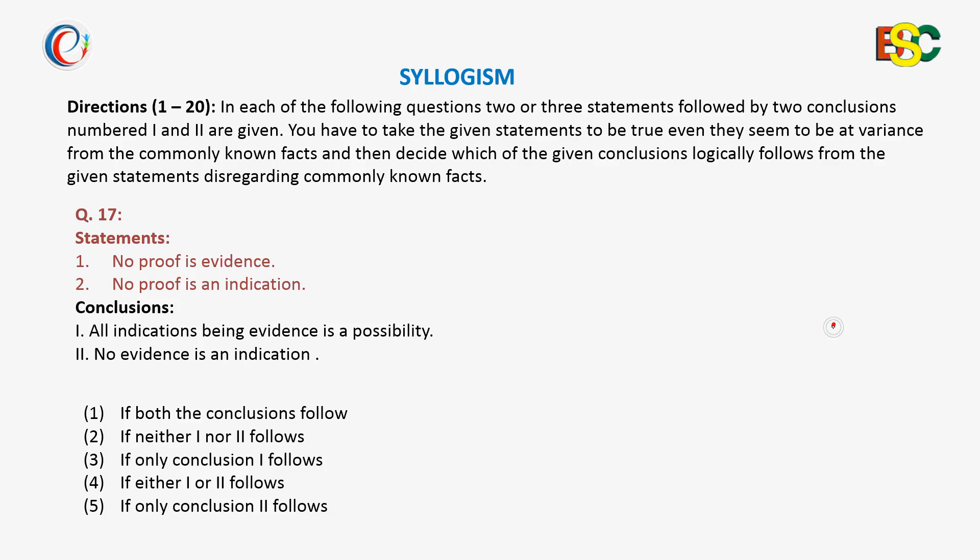Now coming to the next question, here we have a set of two statements, both are negative in nature, and two conclusions. One conclusion is positive with the positive possibility case, and the second one is negative.